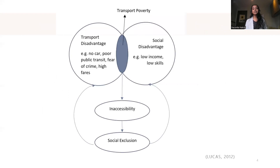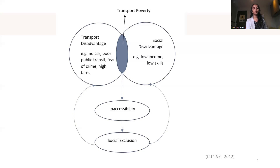This dynamic is demonstrated by this diagram. As we can see, an overlapping of transport disadvantage — like no car or public transit, fear of crime, and high fares — and social disadvantage like low income can lead to transport poverty, which in turn leads to inaccessibility and social exclusion. Such exclusion can further intensify transport and social disadvantage.